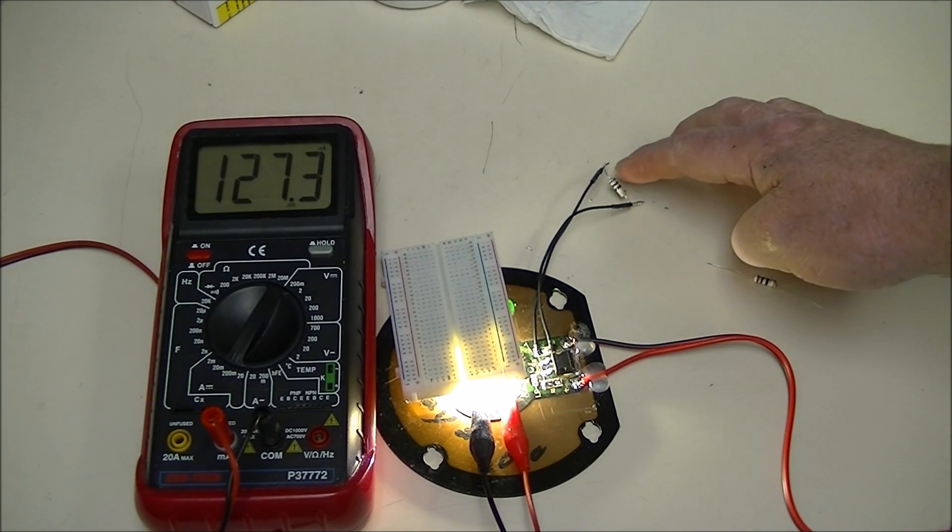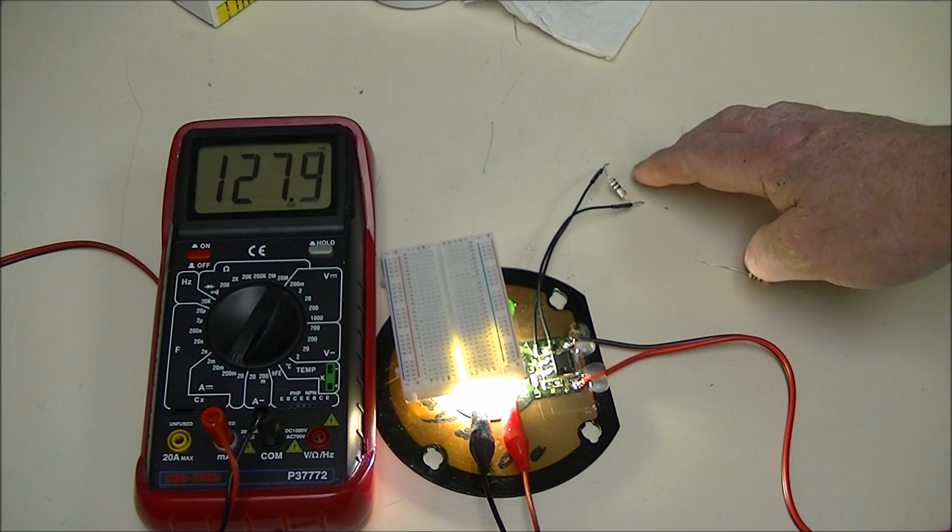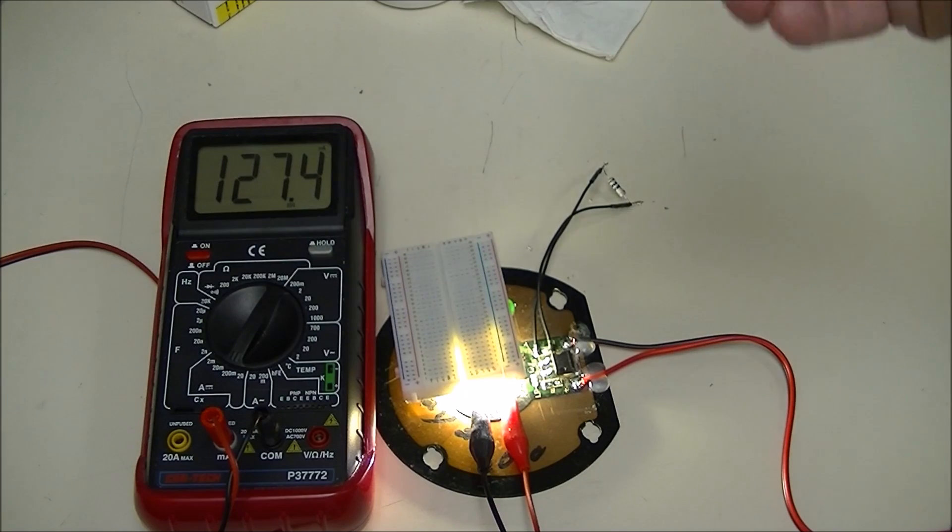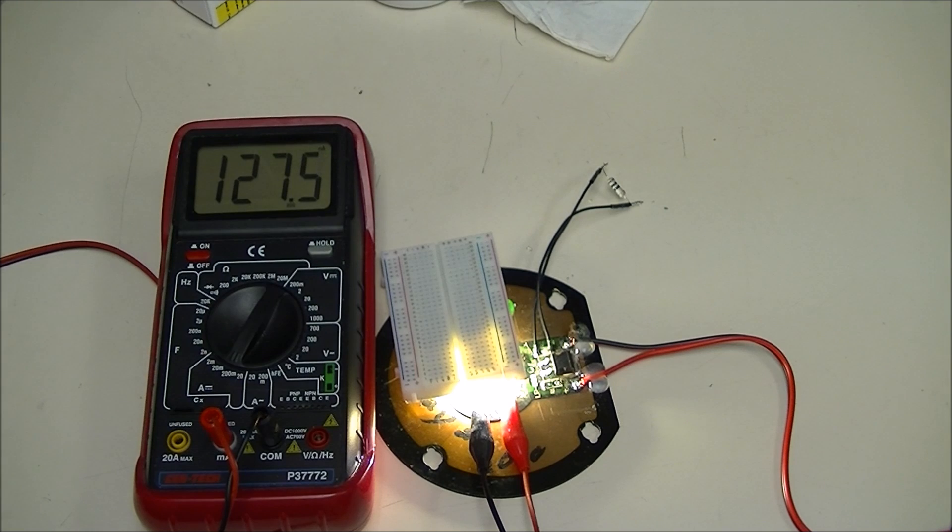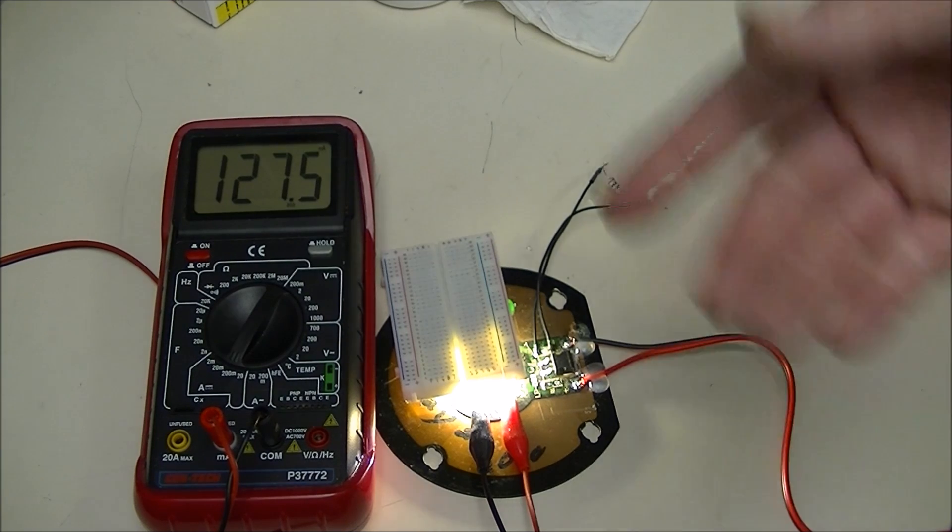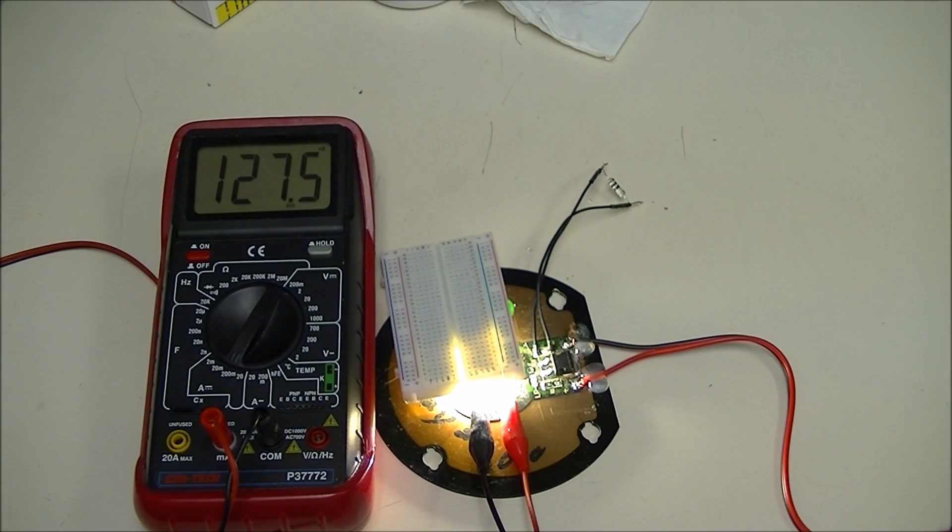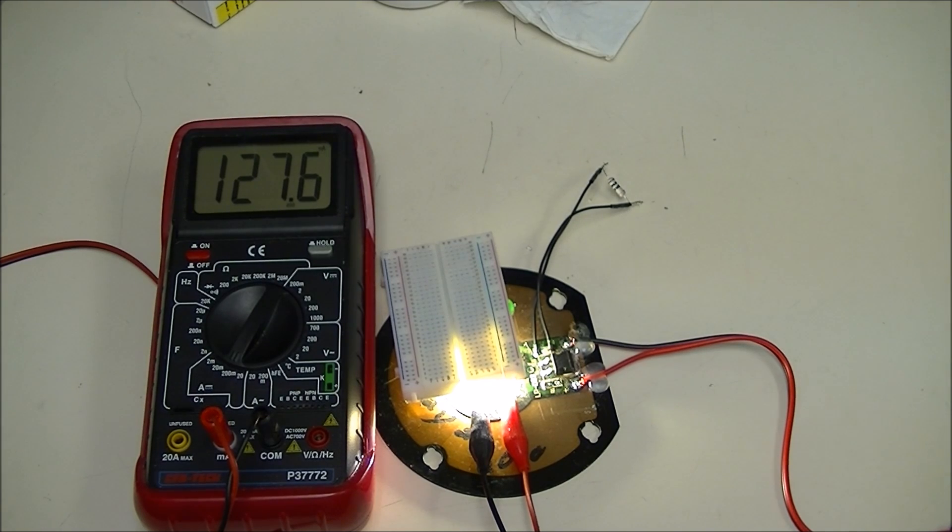This is a 20 ohm resistor. I'm going to wire it in place of the 10 ohm resistor, and that should cut the current in half. 1.25 volts divided by 20, that's going to be about between 60 and 70 milliamps. Let's find out if it works.